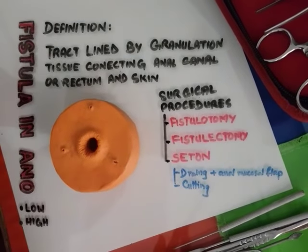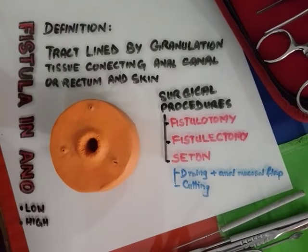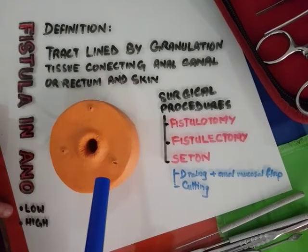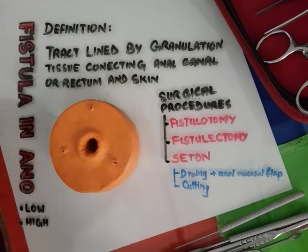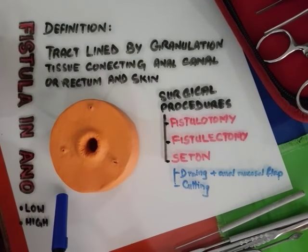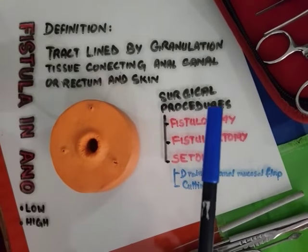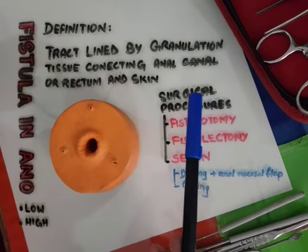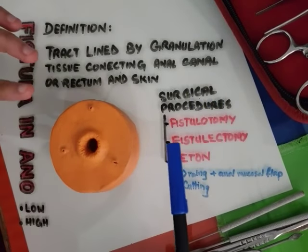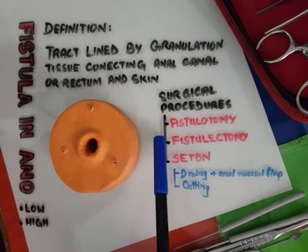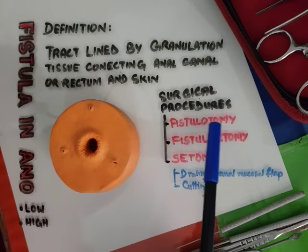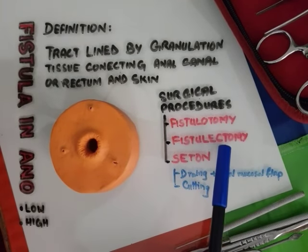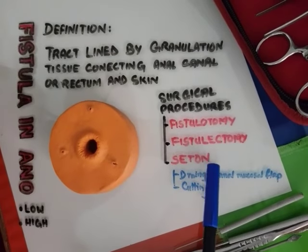Fistulas are basically of two types: low anal fistulas and high anal fistulas. Their treatments are different because their depth is different. There are three main surgical procedures: one is fistulotomy, the other is fistulectomy, and the third is seton.